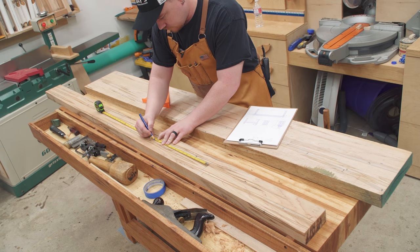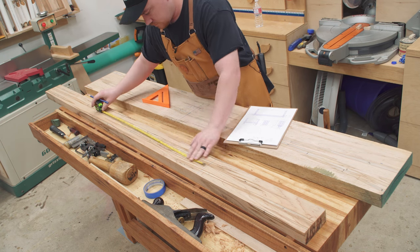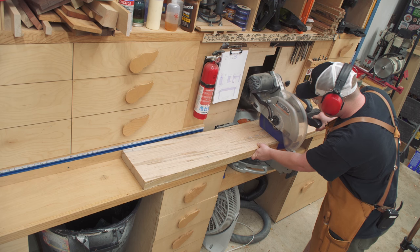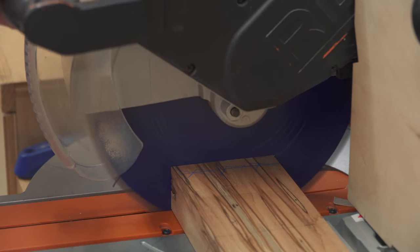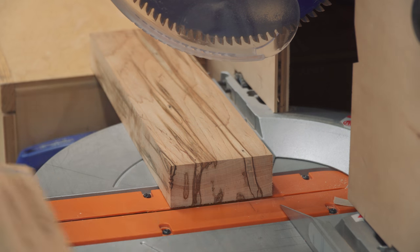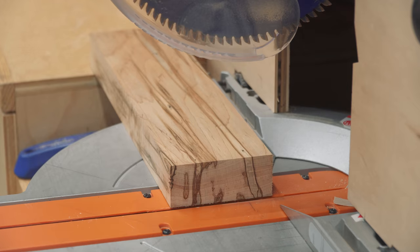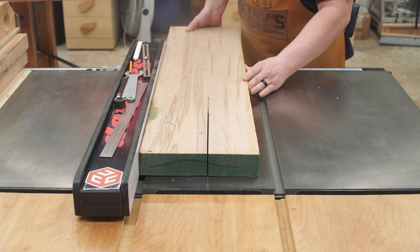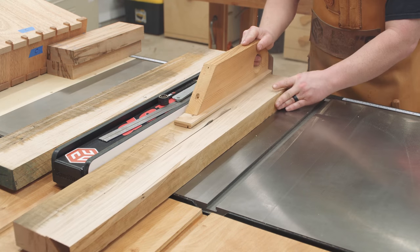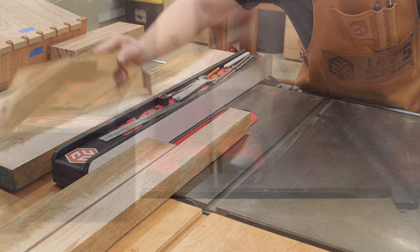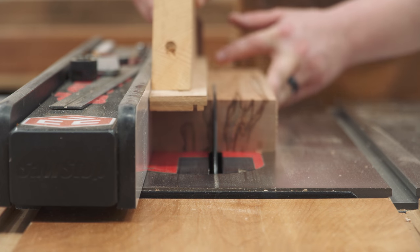As always, my lumber milling process starts by laying out each part on the rough sawn boards and then cross cutting them to rough length a little bit longer than the final dimensions at the miter saw. And as these boards are cut, you can really see how deep the ambrosia streaking is. This stuff is truly some beautiful wood to work with. Next up for this batch is to rip the pieces to rough width.